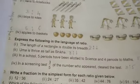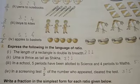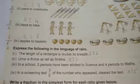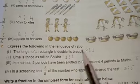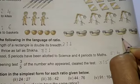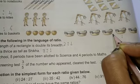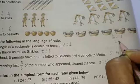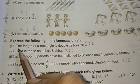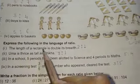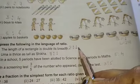Question number two is, express the following in the language of ratio. The length of a rectangle is double its breadth. If I have to write the length of a rectangle, what is the length of a rectangle? Twice of its breadth. The length of a rectangle is double its breadth. It means the ratio is two is to one.